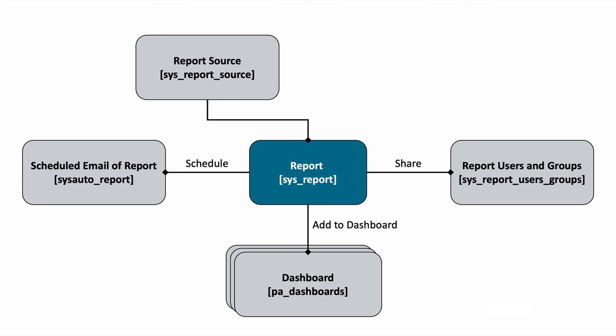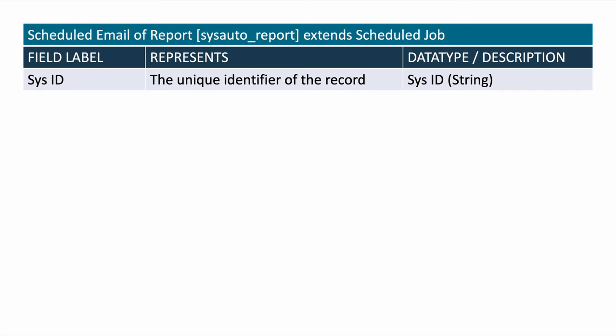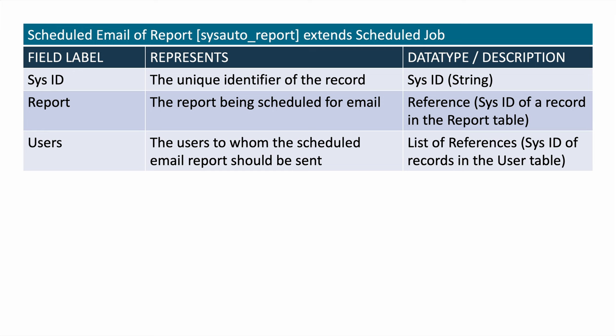Now that we know about reports and how they get created and managed, let's quickly cover the remainder of the data model and the related functionality — this is really all about getting the reports in front of the eyeballs that need to see them. Let's talk about scheduling first: setting up a report to automatically execute and get emailed to an audience on some recurring basis. The Scheduled Email of Reports table — that's sys_auto_report — stores a record for every scheduled email report and includes all of the fields we need: which report, when to execute it, and who to send it to. It has its SysID field, the report field storing a reference to the SysID of the report being scheduled, and the users field — a special list type field that enables a one-to-many relationship between the scheduled report and one or more users to whom the report should be emailed, using a reference to the SysID of the user record in the sys_user table.